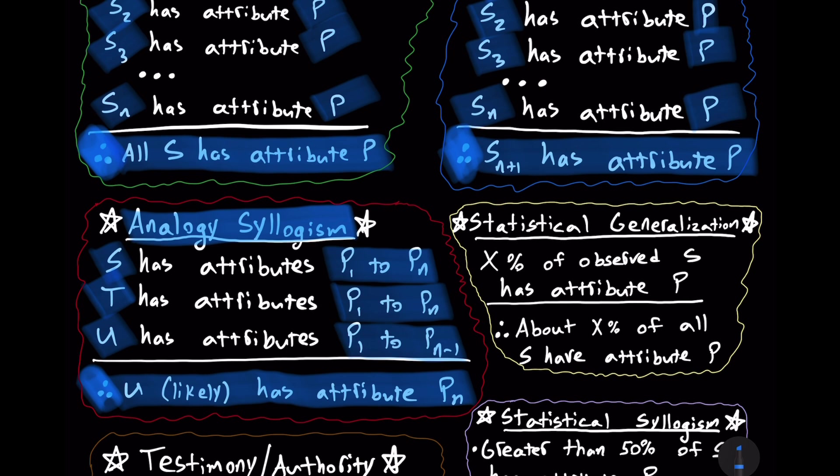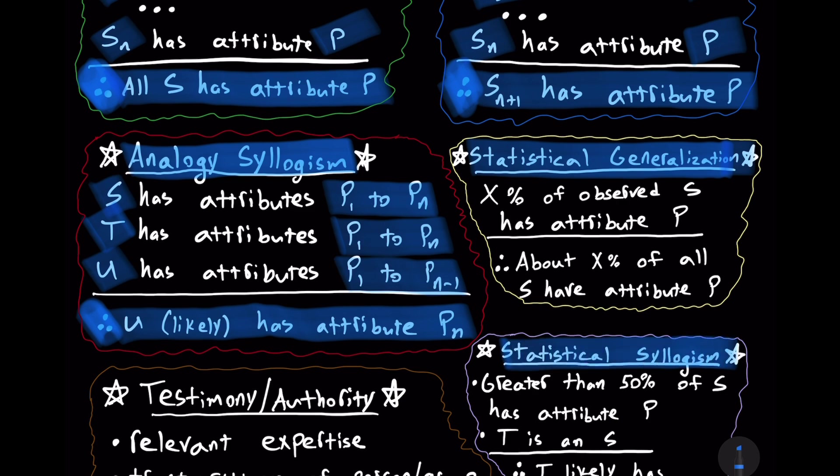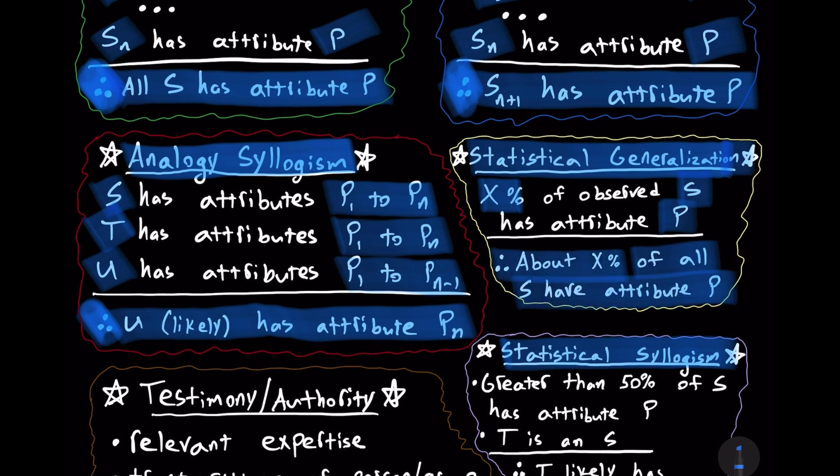And then we have statistics, which is a huge topic in and of itself, obviously, and I'm no expert. But there's some basic things we can state here and understand here for sure. And that includes statistical generalization and also statistical syllogism. When we're making an inference about all members of a population based on a sample, we have a statistical generalization. For example, since 98% of the widgets sampled in the factory work, it likely follows that about 98% of all the widgets in the factory work. Again, that sample better be good. So X percentage of observed S has observed P. Therefore, about X percentage of all S has attribute P.